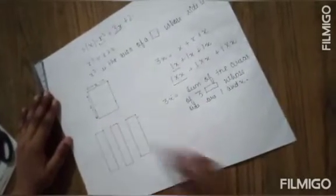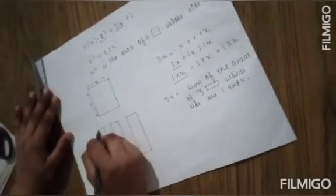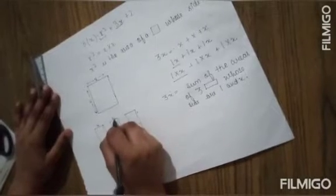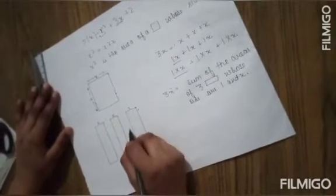So first side can be x and third side is x and another is 1.